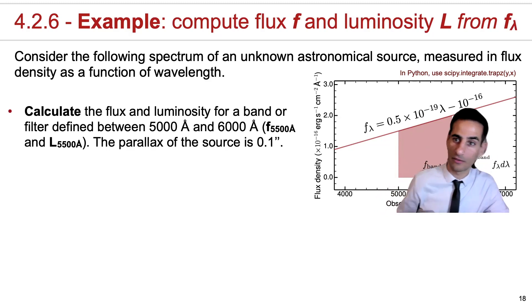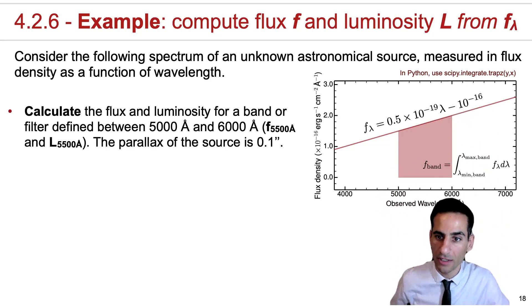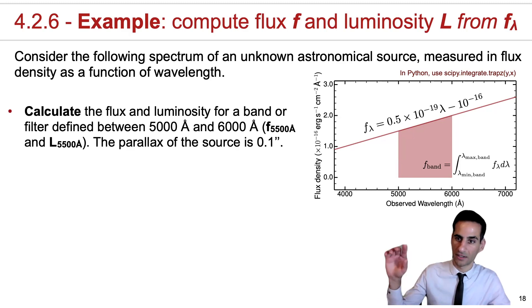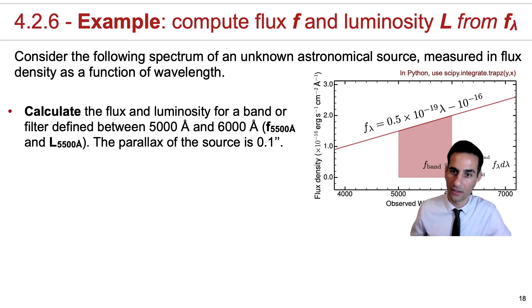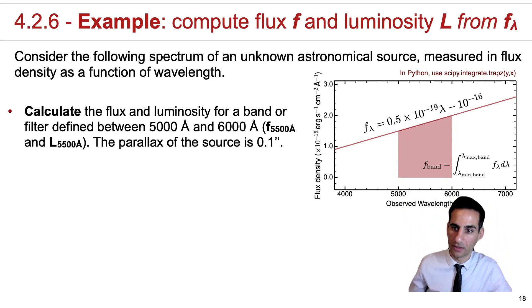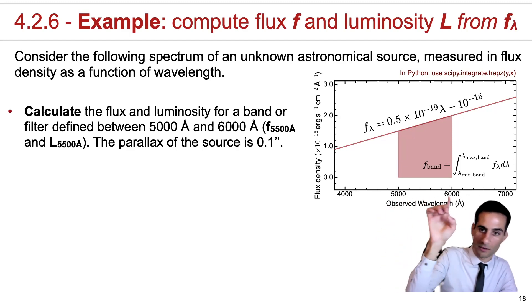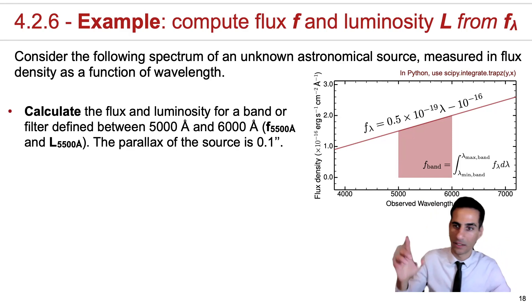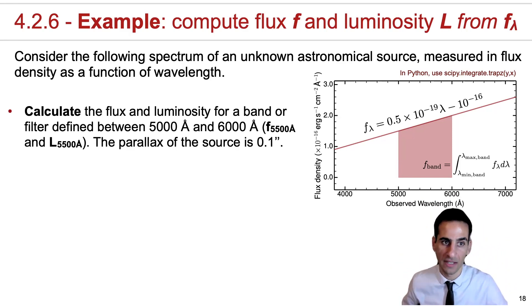And in this case, whatever the source is, it has a rising flux density with wavelengths. And if we want to calculate the flux at a specific band like this, all we need to do is to integrate this spectrum from the minimum wavelength, in this case 5000 angstrom to 6000 angstrom, and this is what this example is asking you to do.